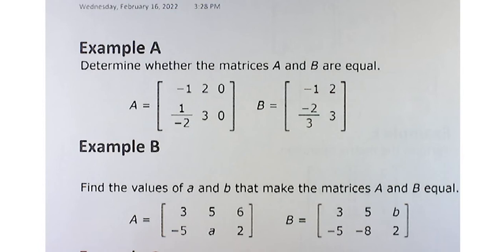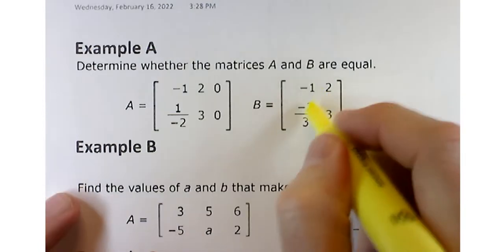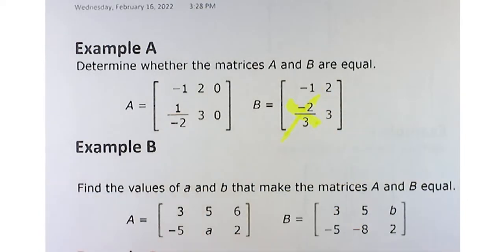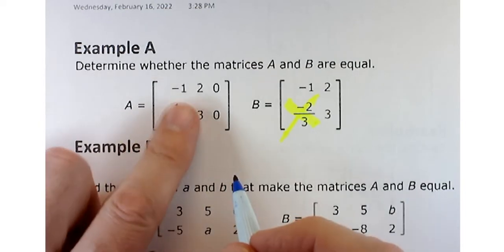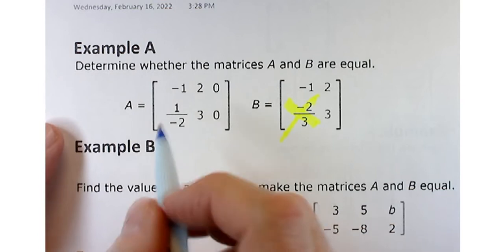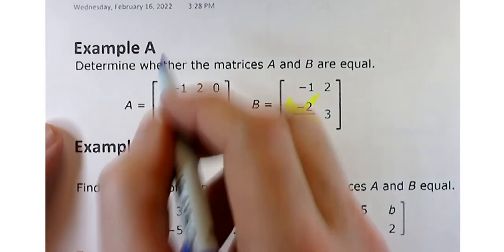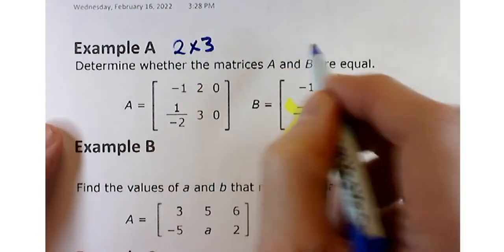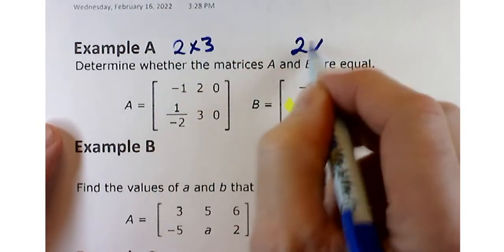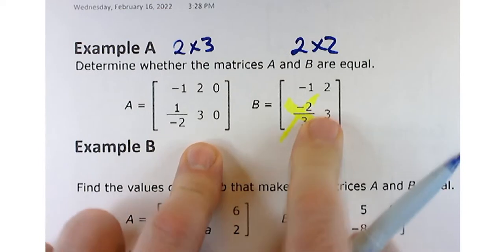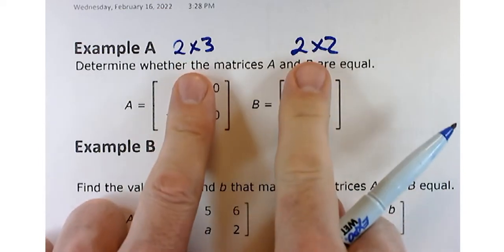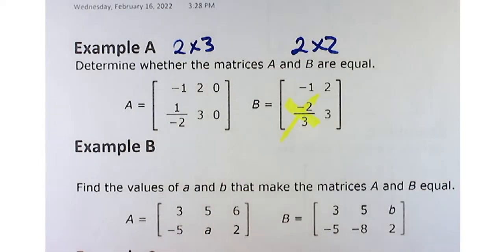There's actually another problem with these two matrices being equal: they're different dimensions. What are the dimensions of this matrix? A 2 by 3, and this one's a 2 by 2. So right off the bat, if the dimensions don't match, they're not going to be equal to each other.